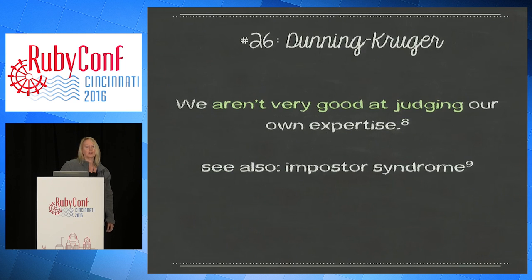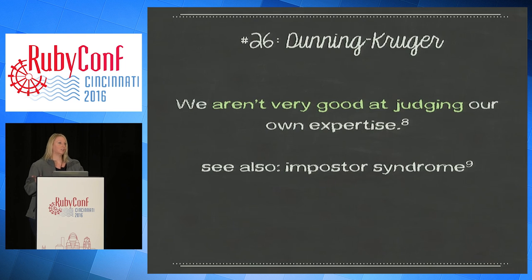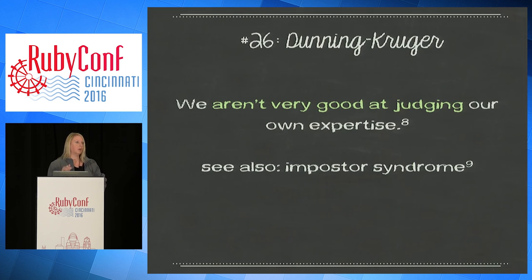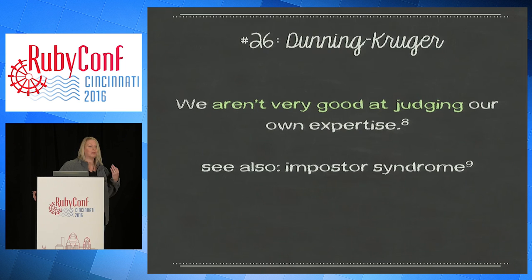The next one is Dunning-Kruger — and its other side, imposter syndrome, which you've probably all heard of because we talk about it a lot in software. Basically, we are not very good at judging our own expertise and how we stand relative to others. It's really frustrating to be on the receiving end of someone who has Dunning-Kruger, or even someone with imposter syndrome who is an awesome contributor but doesn't feel confident enough. I want to challenge you to look at your own expertise a little more objectively, for good and bad.